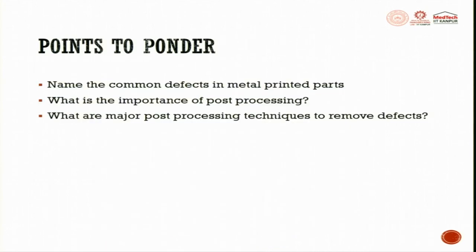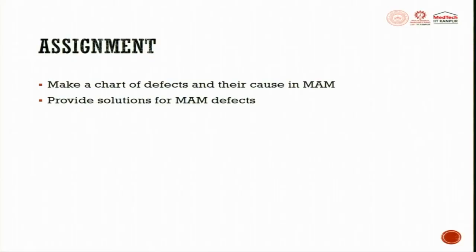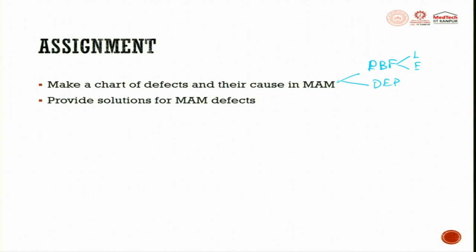Points to ponder in this lecture: we looked into some common defects in metal printed parts, saw the importance of post processing, and discussed major post processing techniques to remove defects. Make a chart of defects and their causes in metal additive manufacturing for both powder bed fusion and DED methods. Consider how laser and electron beam provide solutions for metal additive manufacturing defects. Thank you very much.